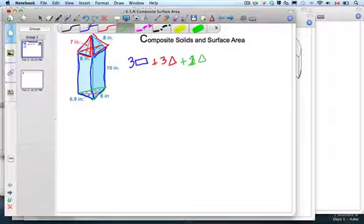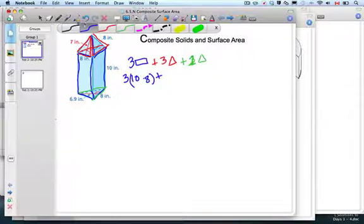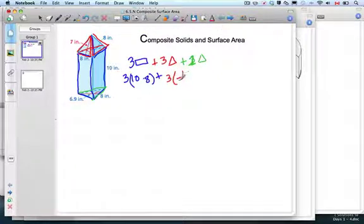So let's just go ahead and crank this all up. So three times the rectangle. Area of the rectangle is base times height, which is 8 times 10, plus three areas of the triangles up top. Well, one of those areas of the triangles is half, the base is 8 times the height, which we know is 7. And the last one we have left is the base, which is half the base of 8 times the height is given us as 6.9 inches.